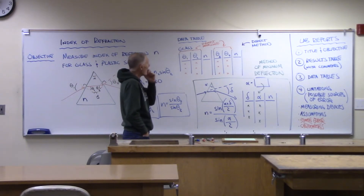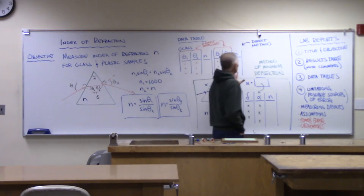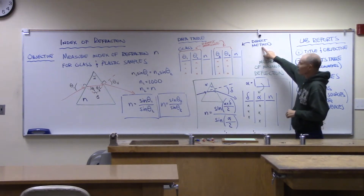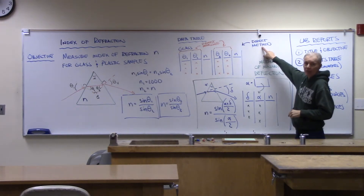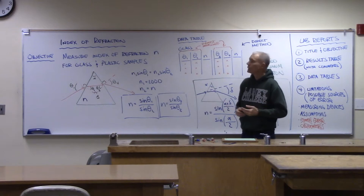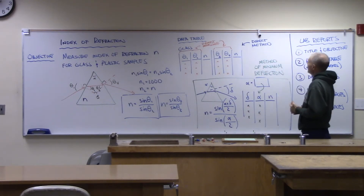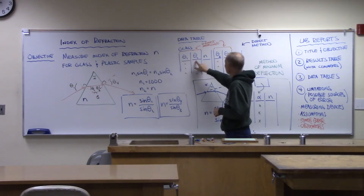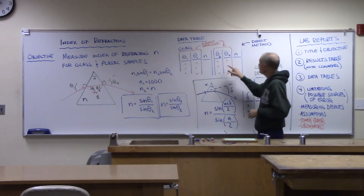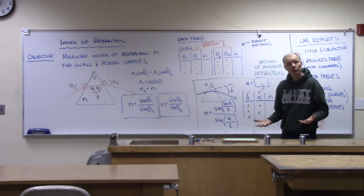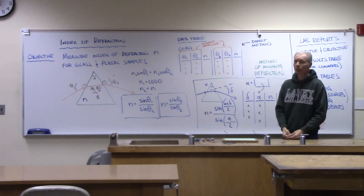What we've set up and talked about here — the details apply to what I'll call the direct method. We actually have two different methods we're going to use for the day. In the direct method, we go in with the protractors, measure theta one, theta two, theta three, theta four, calculate the values of N, and then average over those and report.